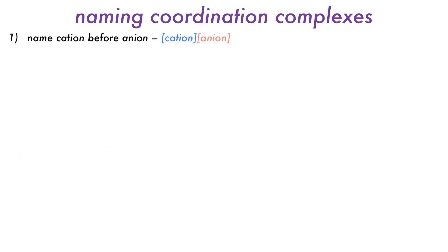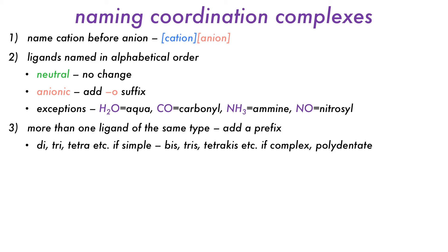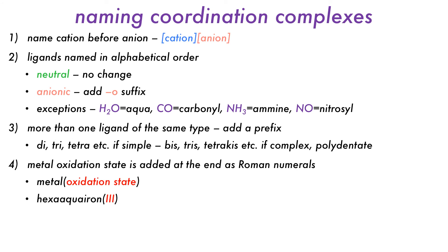To recap, name cations before anions. Ligands are named in alphabetical order, with their names changing based on their charge. If we have multiple of the same ligand, we need to indicate that with prefixes. Oxidation states of metals are written as roman numerals, and we label isomerism with the usual prefixes, and denote bridging ligands with mu.